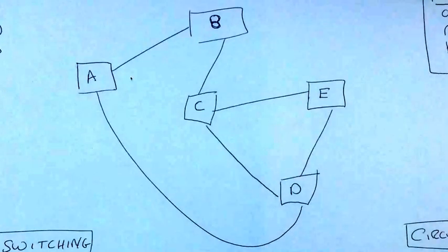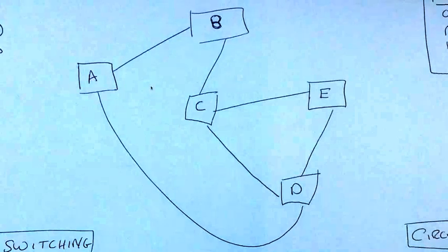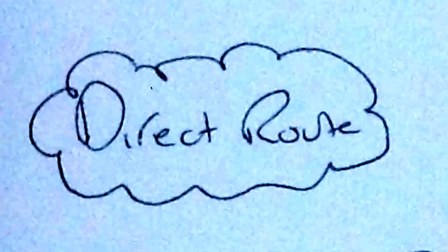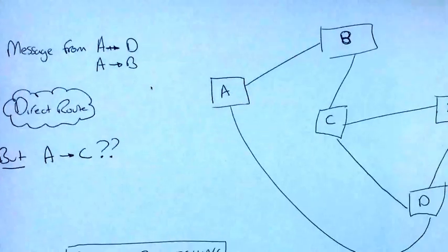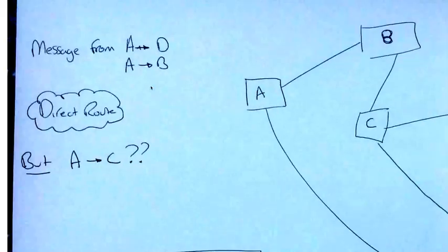Again, we've got a direct route. We don't have to go through any other machines to get to either of these. However, if we wanted to get to E or to C, we might have to take a different route through another set of computers. So we've got a direct route from A to B and we've got a direct route from A to D.